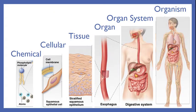The digestive system has a function of bringing food in, processing it, absorbing the nutrients, and excreting the rest. When all of those organ systems work together, we produce an organism — you and me.